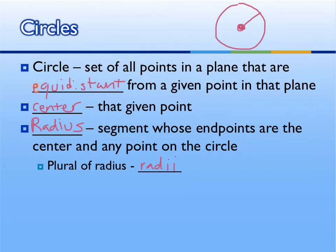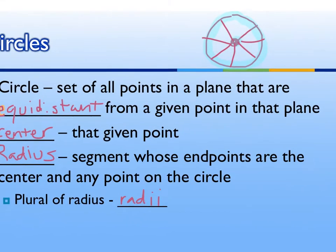First we have a circle, which is the set of all points in a plane that are equidistant from a given point in that plane. The center is that given point. In this circle, our center is the center of the circle, and all of these points on the circle are equidistant from the center. Our radius is the segment whose endpoints are the center and any point on the circle. All of these lines that go from the center to the edge of the circle are radiuses. The plural of radius is radii, so these would all be radii of the circle.